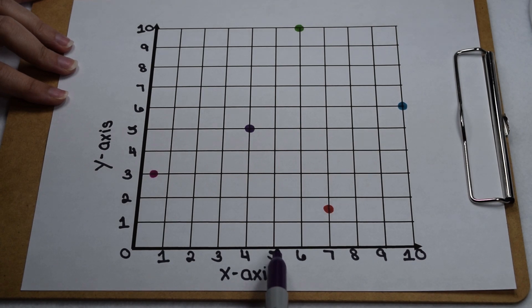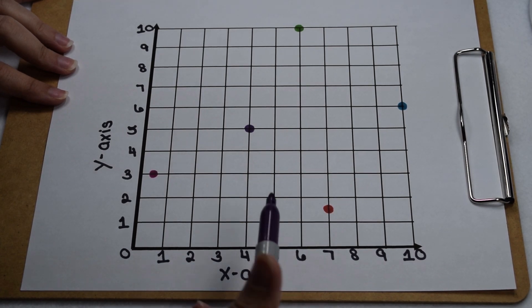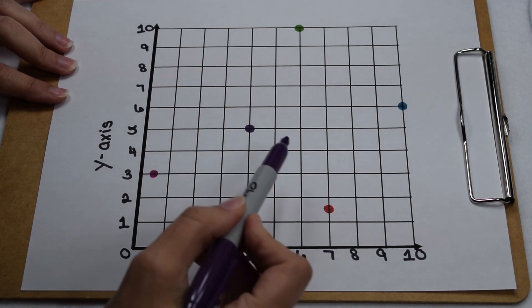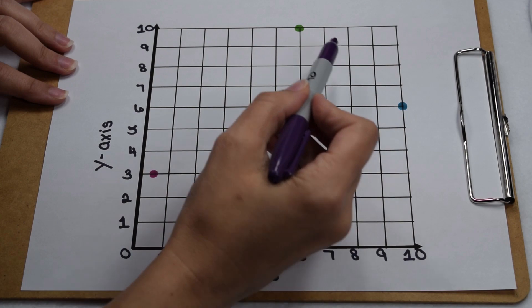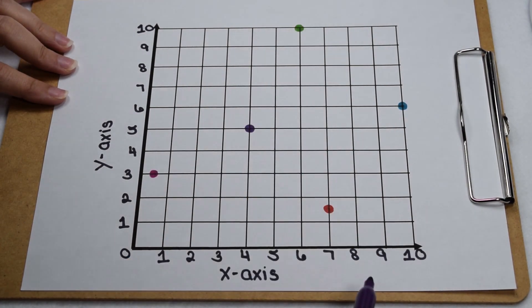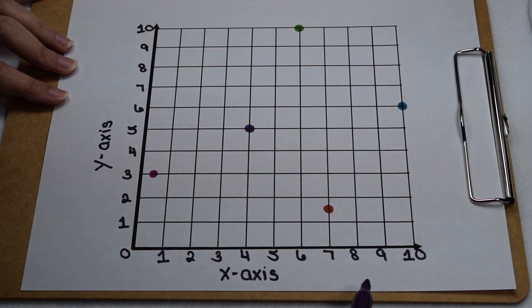Understanding the data on a graph is a crucial skill when working with coordinate planes. For each of the points on our graph, we're going to work to determine which ordered pair best represents their location.